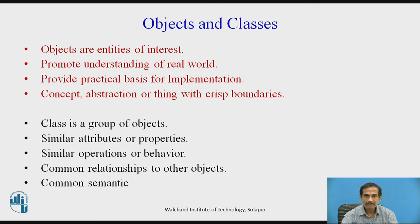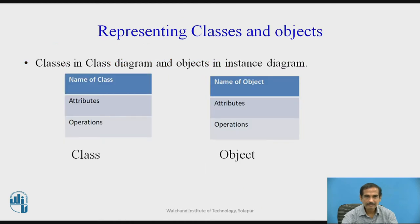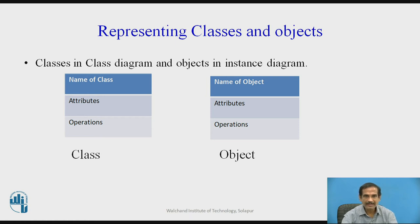Objects are entities to be taken into consideration. A class is a group of objects that have similar attributes or properties, similar operations or behavior, common relationships to other objects, and common semantics. We represent classes and objects in a structured form: every class has a class name, its attributes which describe the class, and the operations which can be performed on it. In an instance diagram, we have an object with an object name, its attributes, and the operations that can be performed on those attributes. Classes are seen in the class diagram and objects are seen in the instance diagram.